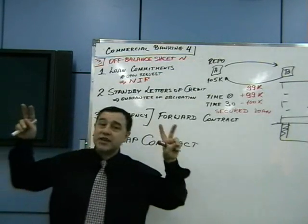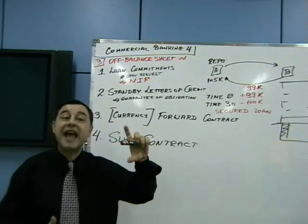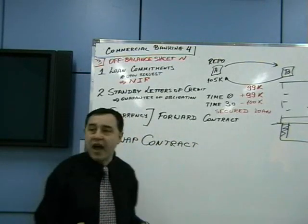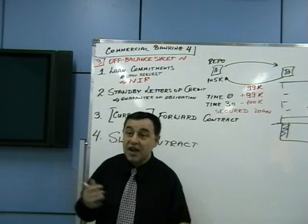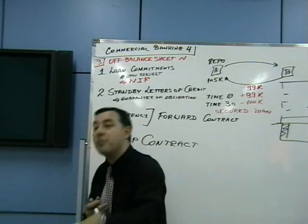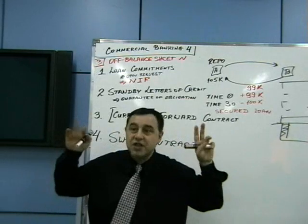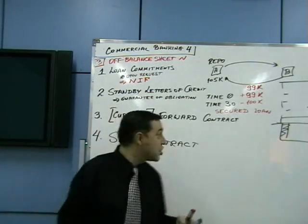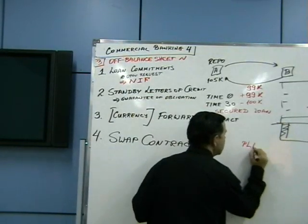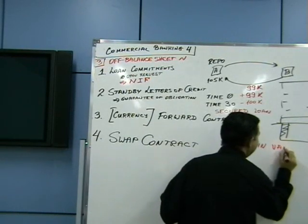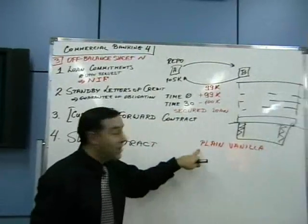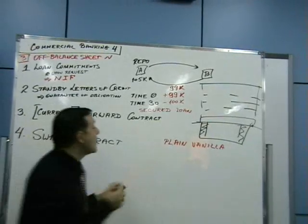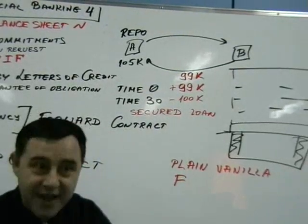In an interest rate swap, typically there is a floating interest cash flow exchanged for a fixed interest cash flow. There could be a thousand and one different fundamental economic reasons for doing this. 'Plain vanilla' or 'plain vanilla swap' means the simplest and most straightforward version — like plain vanilla ice cream with no added flavors.